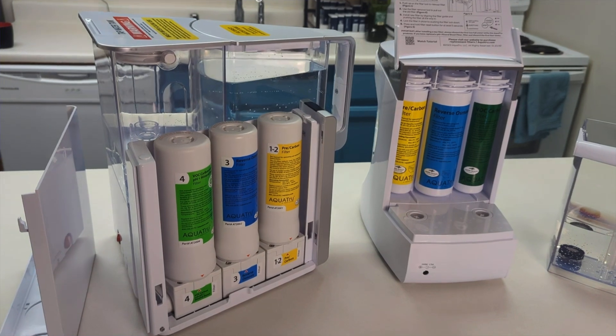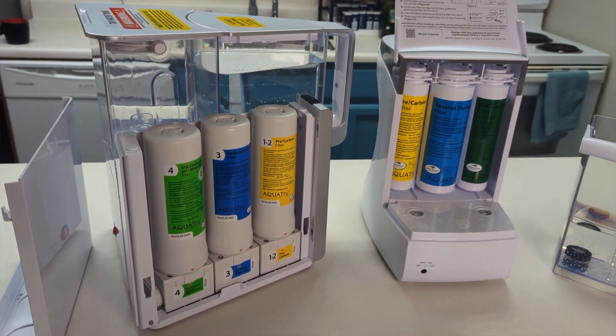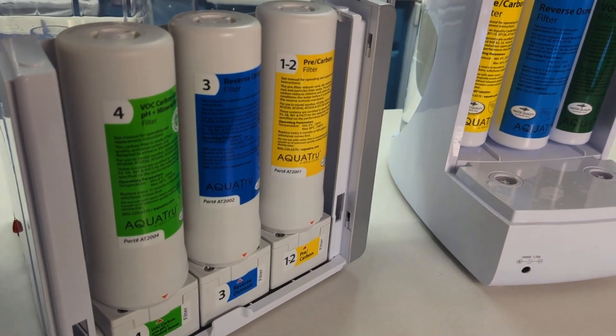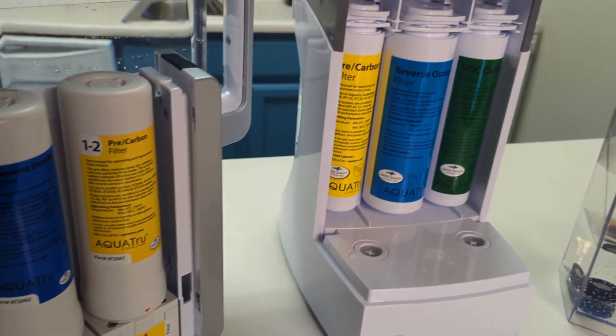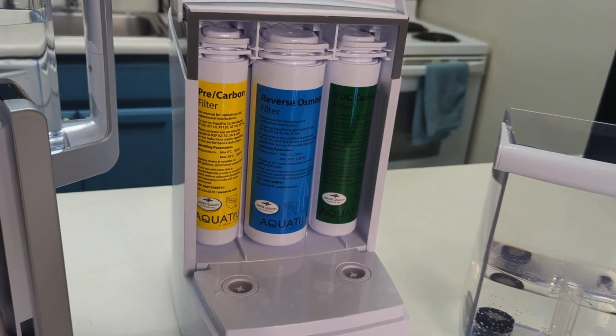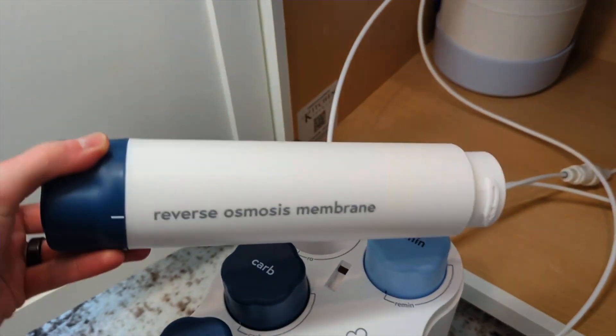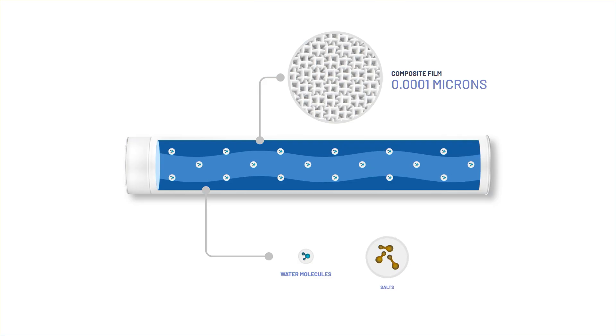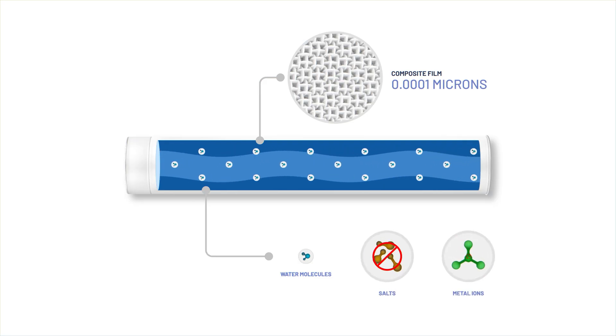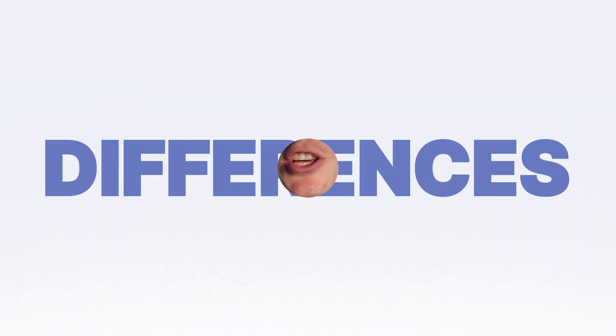Reverse osmosis takes this treatment a step further. It combines multiple filters like carbon and sediment filters with a semi-permeable membrane to remove up to 99.9% of total dissolved solids. Water is forced through the RO membrane under pressure, leaving behind contaminants which are then flushed away as wastewater.